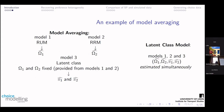Just a very brief example of what model averaging actually means. We've got a random utility model and a random regret model. We get the estimates for those two models, then use a latent class model where those estimates are fixed, and we estimate just the class allocation. A fully flexible latent class model would estimate all of those parameters simultaneously, and that would be possible in some cases, but a lot of times it wouldn't be possible.